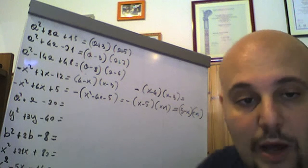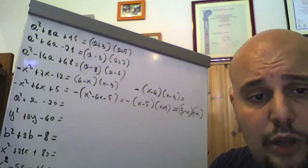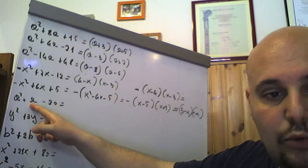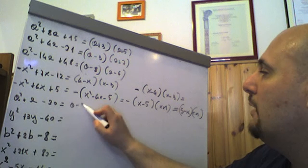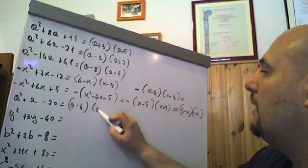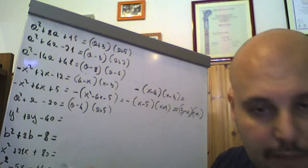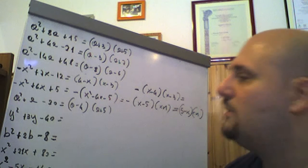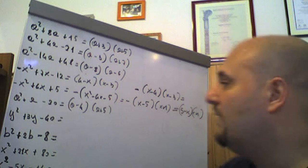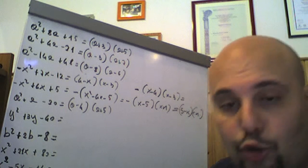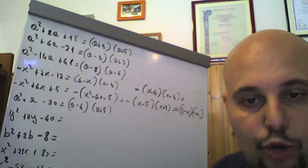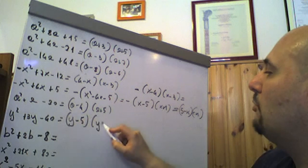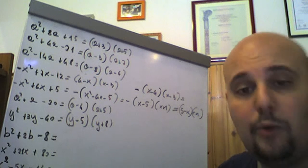Riprendiamo: a² + a − 20 è un normalissimo trinomio notevole, dove 5 + (−4) = 1 e 5 × (−4) = −20. Quindi è (a − 4)(a + 5), scomposizione di a² + a − 20. Poi y² + 3y − 40: è evidente che 8 − 5 = 3 e 8 × (−5) = −40, quindi è (y − 5)(y + 8), scomposizione di y² + 3y − 40.